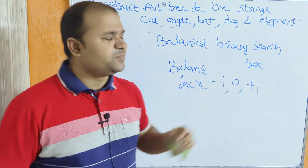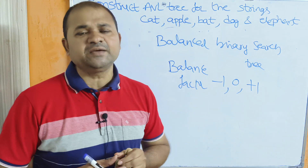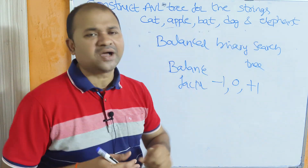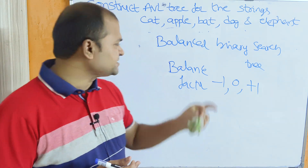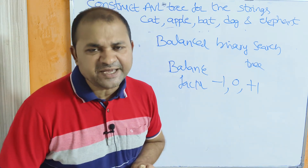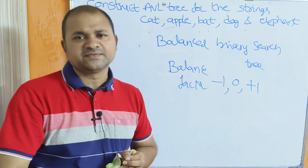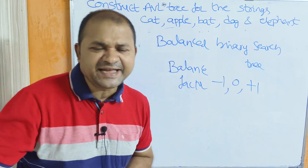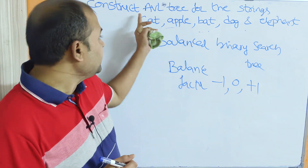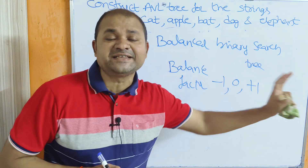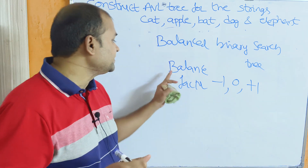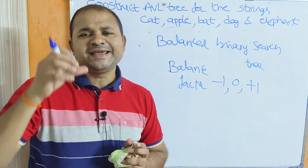Let us construct an AVL tree for the strings: cat, apple, bat, dog, and elephant. An AVL tree is a balanced binary search tree, where the left subtree contains keys less than the root and the right subtree contains keys greater than the root. Balanced means we calculate the balance factor for each and every node in the tree.